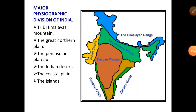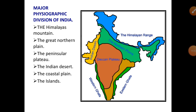Okay students, today's portion is over. In the next class, we will see about the Peninsular Plateau, the Indian Desert, the Coastal Plain, and Islands. Note down all the points and clarify your doubts when school reopens. Thank you, children.